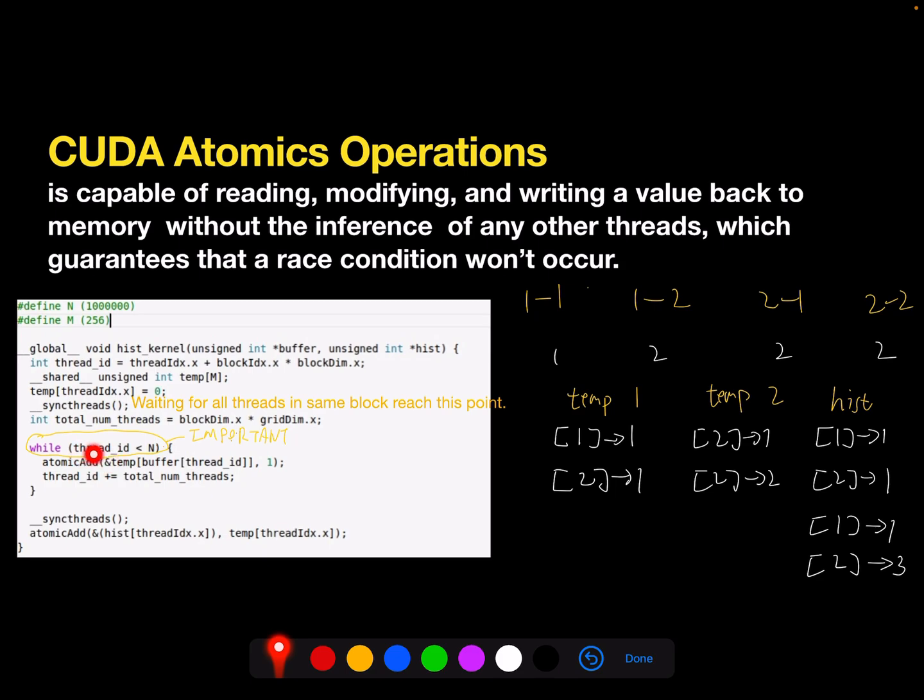Let's ignore this while loop for a little bit, just using examples to go through the whole iteration first. Here I just made some numbers. Then the 1-1 means here is what happens in the first block and the first thread. And 1-2 is the first block and the second thread. 2-1 is block 2 and the first thread. Then those are the numbers for each thread.